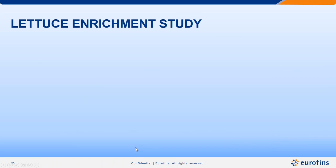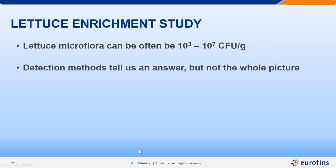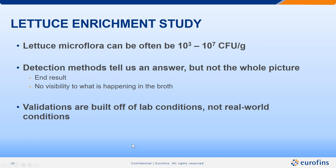On a produce-related study: on lettuce you can often find 10³ to 10⁷ bacteria per gram — a lot of diversity on these leaves. Detection methods tell us an answer — whether or not a certain thing is there — but don't give us the whole picture of what's going on in the broth, how the organism is responding, and how fast it's growing. Validations of our detection methods are built from lab conditions, not necessarily real-world conditions, which can be quite diverse, especially in produce where there's an amazing plethora of different environments that could really challenge a validation.